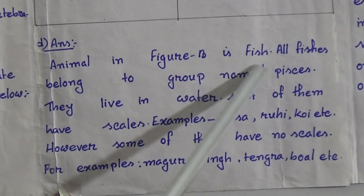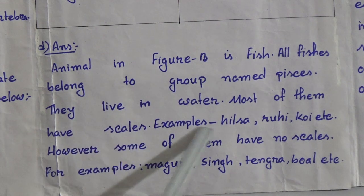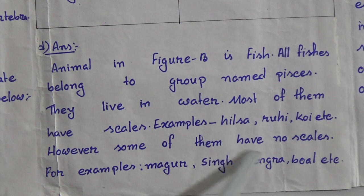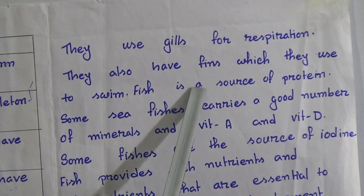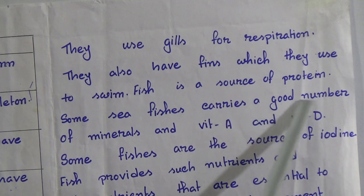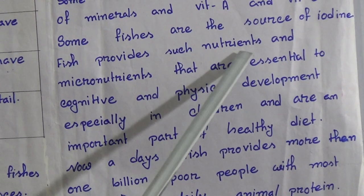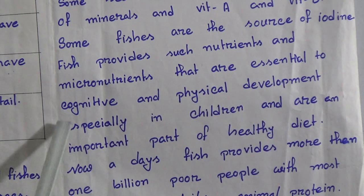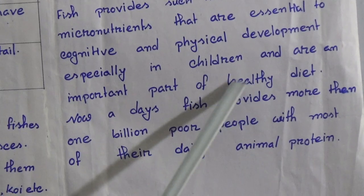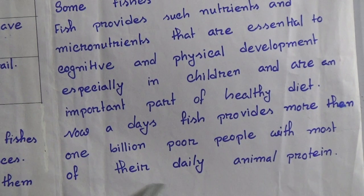Answer to question (d): The animal in Figure B is a fish. All fishes belong to the group named Pisces. They live in water; most have scales — examples: hilsha, rui, koi — while some have no scales — examples: magur, shing, tangra, boal. They use gills for respiration and fins for swimming. Fish is a source of protein. Some sea fishes carry minerals, vitamin A, and vitamin D. Some fishes are a source of iodine. Fish provides nutrients essential for cognitive and physical development, especially in children, and is an important part of a healthy diet. Fish provides more than 1 billion poor people with most of their daily animal protein.